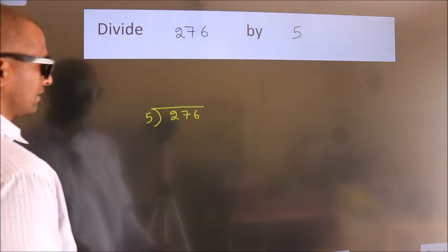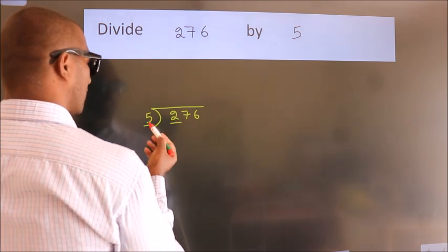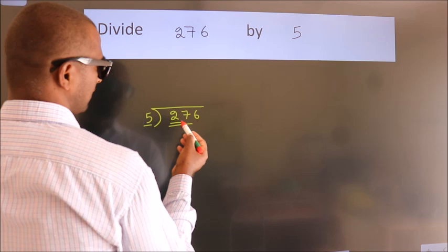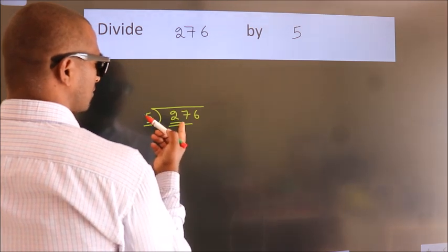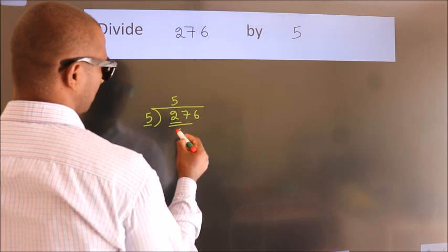Next, here we have 2. Here 5. 2 is smaller than 5, so we should take 2 numbers: 27. A number close to 27 in the 5 table is 5 fives, 25.